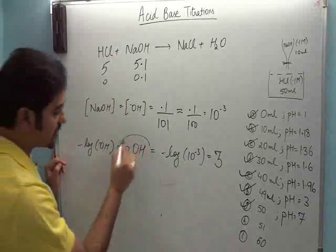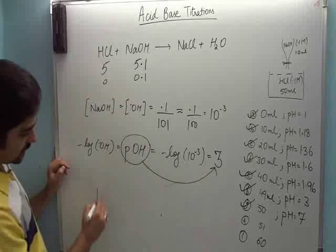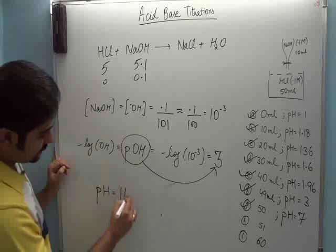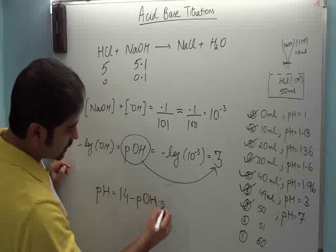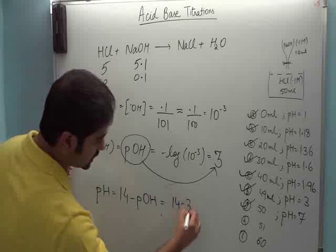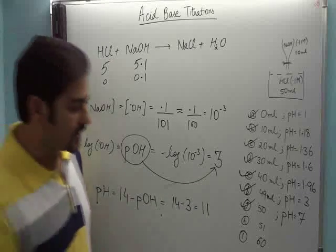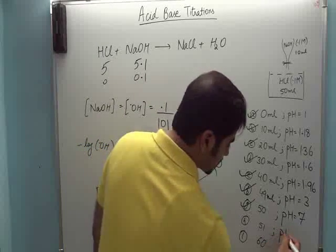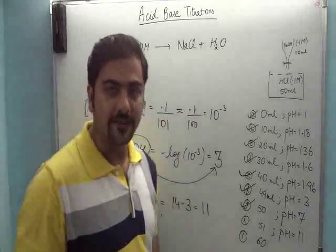That is three. Toh POH teen hai. Toh pH nikalne ka tarika hai: fourteen minus POH. That is fourteen minus three. That is eleven. Toh yahan pe 51 pe jo pH aya, woh aya eleven.